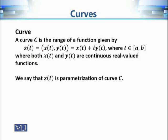A curve is basically a function z(t), which has two components x(t) and y(t). If we want to write it down using complex notation with iota, then this is x(t) plus iota·y(t). Here x(t) is a function of one variable.